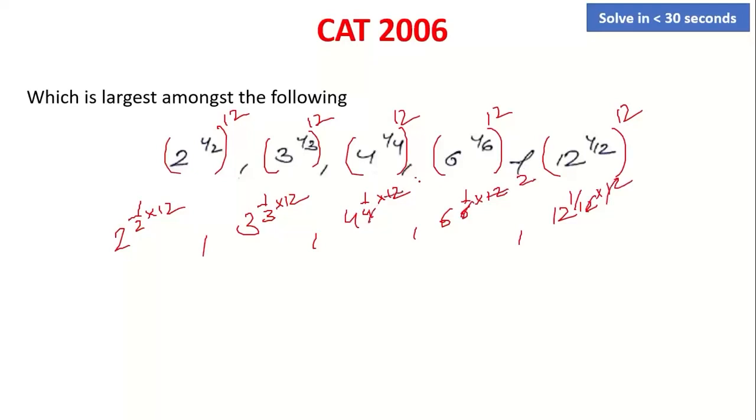2 raised to power 6 is 64. 3 raised to power 4 is 81. 4 raised to power 3 is 64. 6 raised to power 2 is 36. 12 raised to power 1 is 12. Which is the highest amongst the following? 81. Which is the highest amongst these? 3 raised to power 1/3.